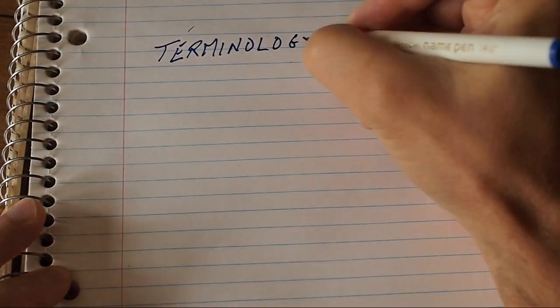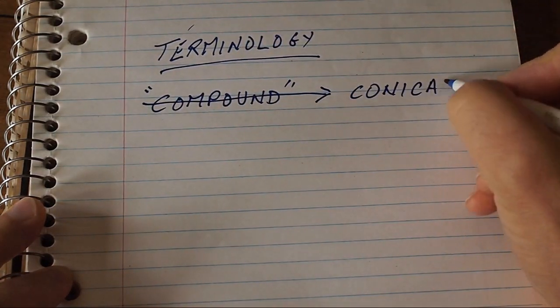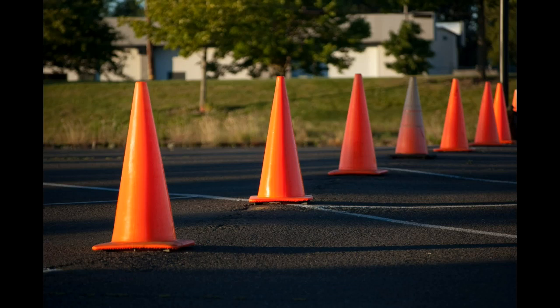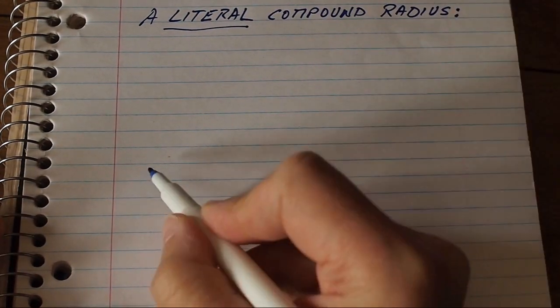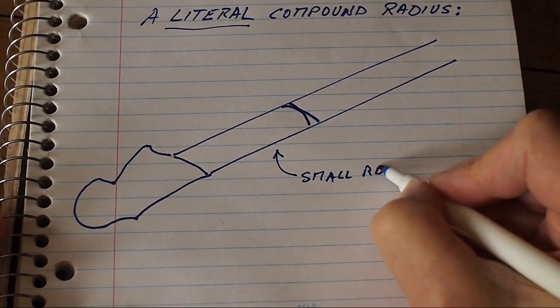Let's start with terminology. Compound radius should be more accurately called conical radius, and other people have made that point. Conical meaning like the section of a cone with a smaller radius at the top than at the bottom. Something that was actually compound would suddenly jump from one radius to another, and that wouldn't be easy to build or to play.